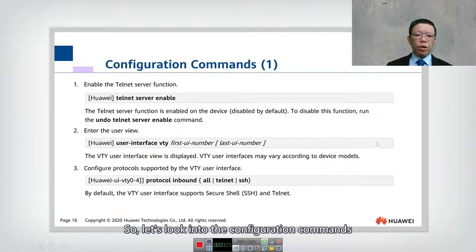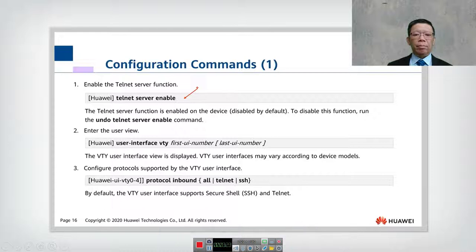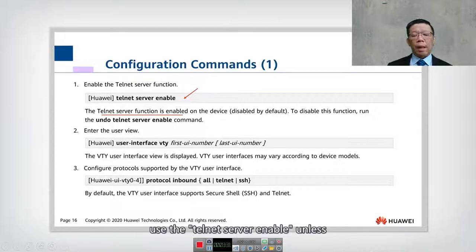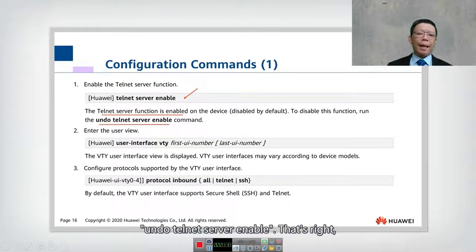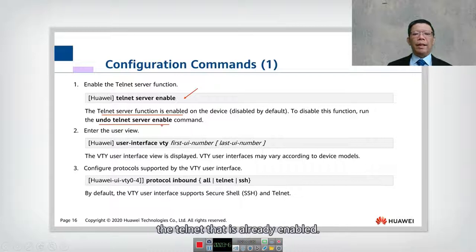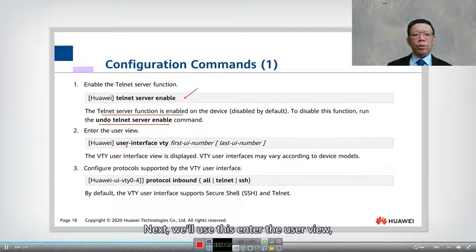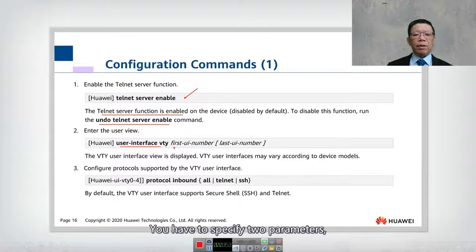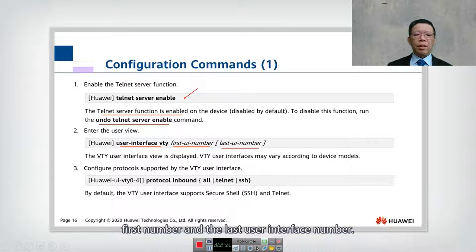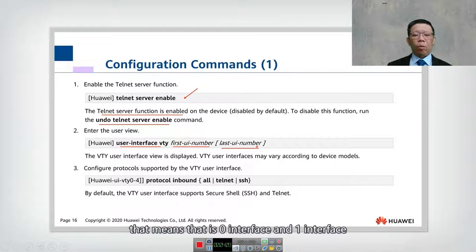Now let's look at the configuration commands for Telnet, which are straightforward. You can enable the Telnet server using the command 'telnet server enable'. By default, the Telnet server function is already enabled, so you don't need to run this command unless it has been disabled. To disable Telnet, use the command 'undo telnet server enable'. Next, to enter the user interface view, use 'user interface vty' and specify two parameters: the first user interface number and the last user interface number — for example, zero to four means interfaces 0, 1, 2, 3, and 4.